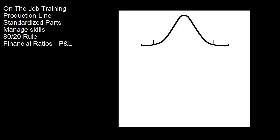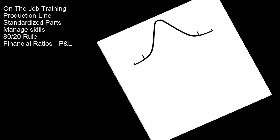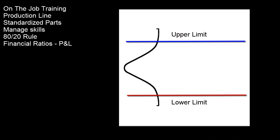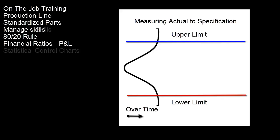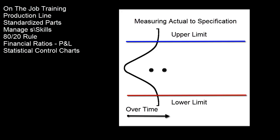In the late 1920s, Walter A. Shewhart and his protege Edward Deming at Bell Labs developed a method to use the normal curve for statistical process control charts. Today, we call that Six Sigma.